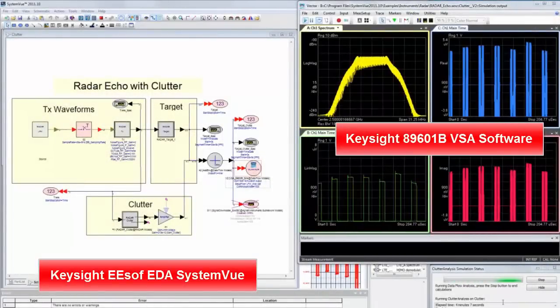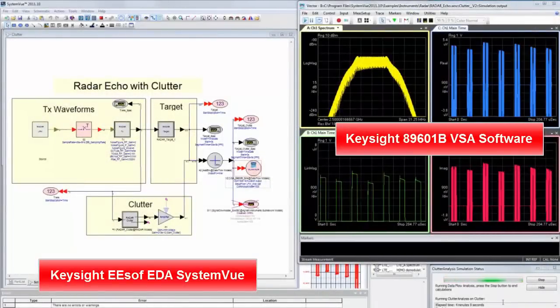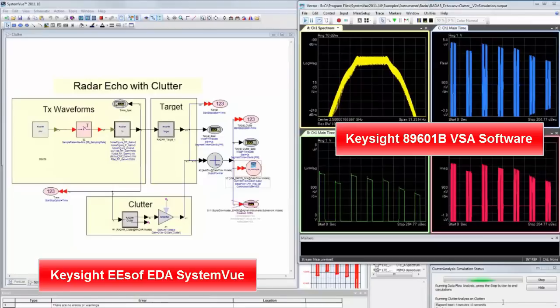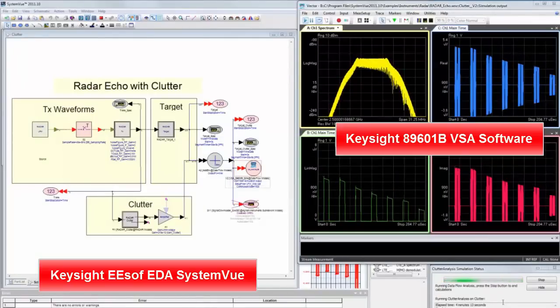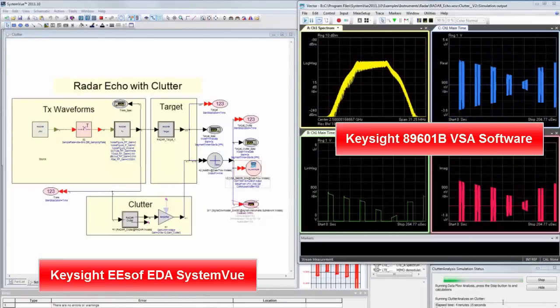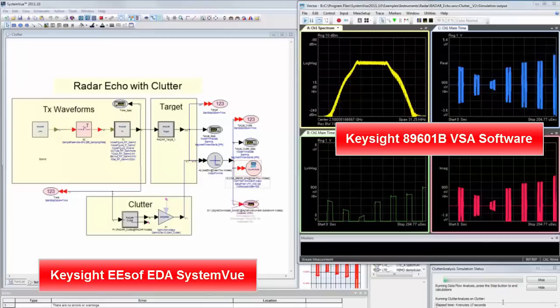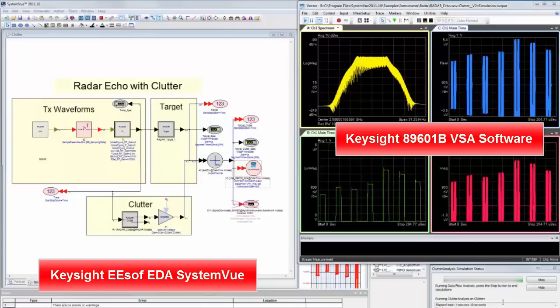This example of a radar echo signal with clutter shows SystemView's ability to generate signal impairments and realistic wideband scenarios inexpensively in the R&D lab for applications such as MILCOM, SATCOM, and radar.